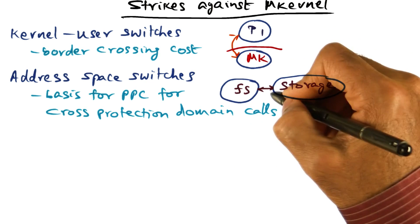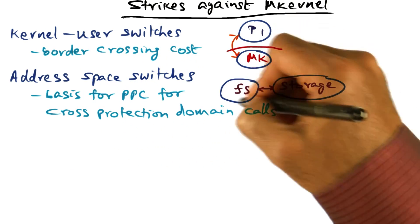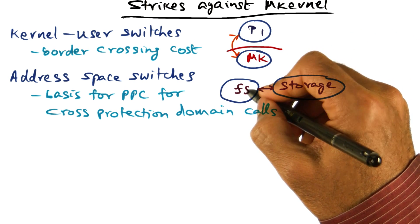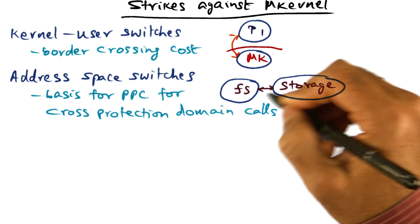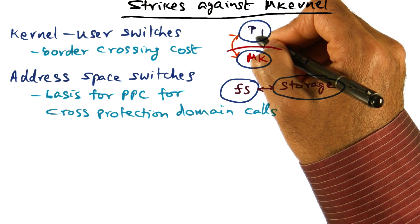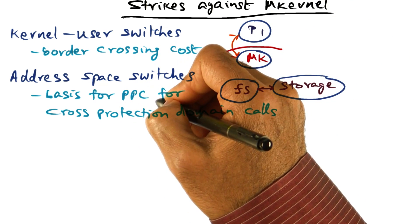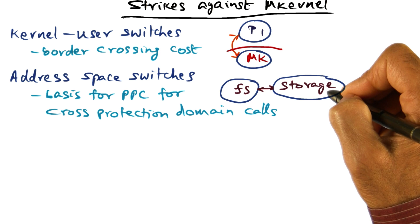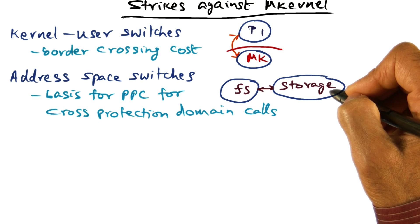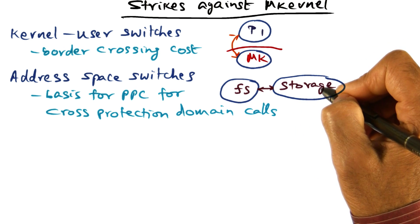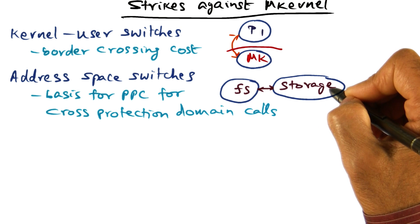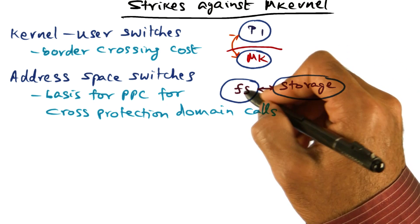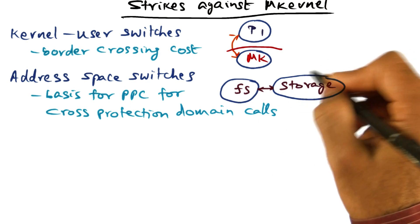Protected procedure call is the basis for cross-protection-domain calls. Here is a protection domain — the file system — and here is another protection domain — the storage module. If the file system has to get some service from the storage module in order to serve the original request from the application, that communication is implemented as a protected procedure call. Going across hardware address spaces minimally involves flushing the TLB of the processor to make room for the TLB entries of the domain being entered. There is an explicit cost involved in going from one address space to another.